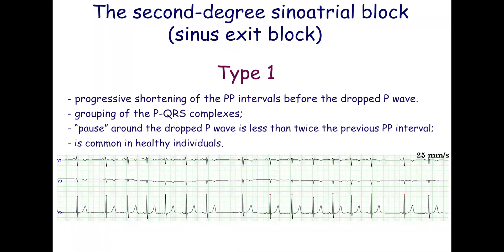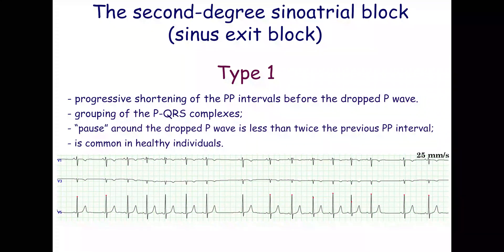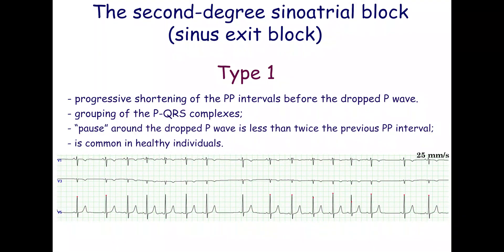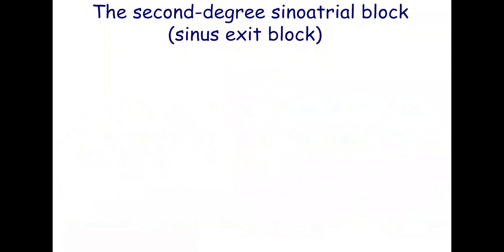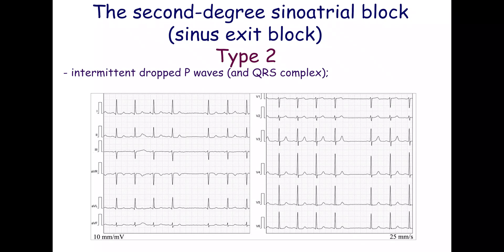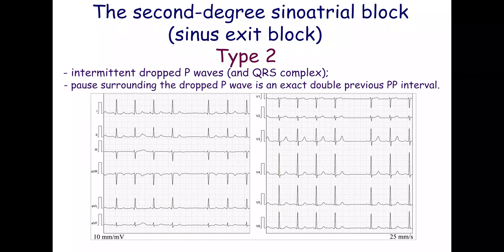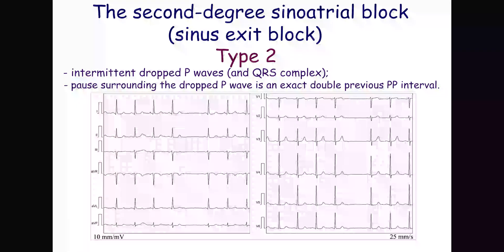The type 1 second-degree sinoatrial block is common in healthy individuals. It may be misinterpreted as sinus arrhythmia. The type 2 second-degree sinoatrial block is characterized by intermittent dropped P-waves. The pause around the dropped P-wave is exactly twice the preceding P-P interval.